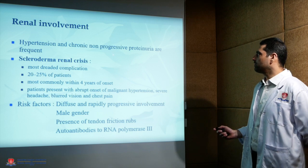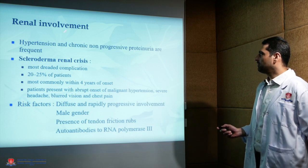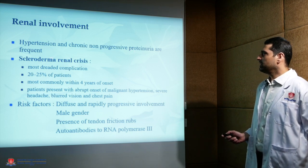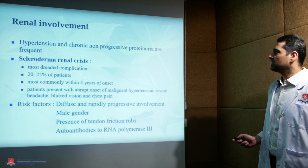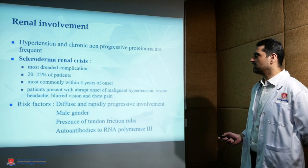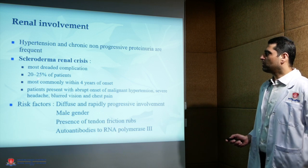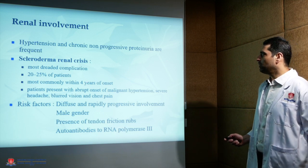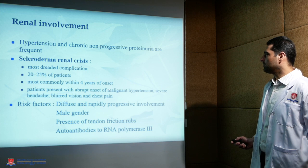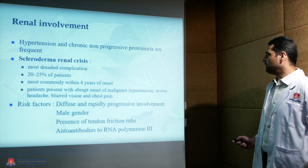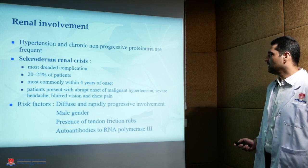Hypertension and chronic non-progressive proteinuria are frequent, and scleroderma renal crisis is the most dreaded complication, developing in 20–25% of patients. Most commonly it occurs within 4 years of onset, and patients present with abrupt onset of malignant hypertension, severe headache, blurred vision, and chest pain.